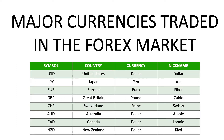Here's a list of all major currencies that are traded in the Forex market. They range from the US dollar, the Japanese yen, the European euro, the British pound, the Swiss franc, the Australian dollar, the Canadian dollar, and the New Zealand dollar.